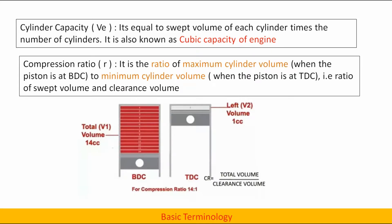Compression ratio: it is ratio of maximum cylinder volume when the piston is at BDC to minimum cylinder volume when the piston is at TDC. That is ratio of swept volume and clearance volume.